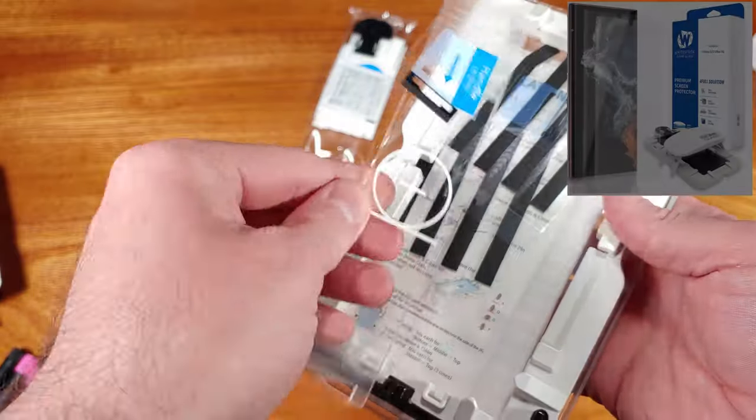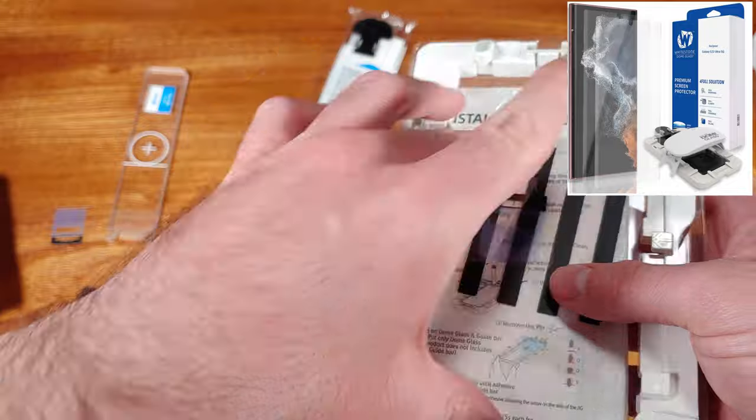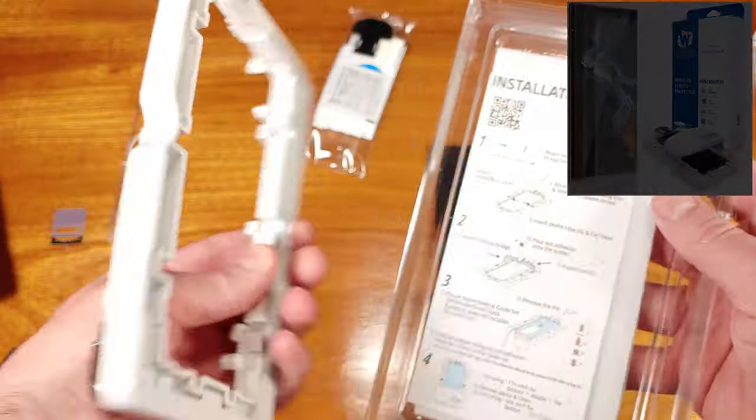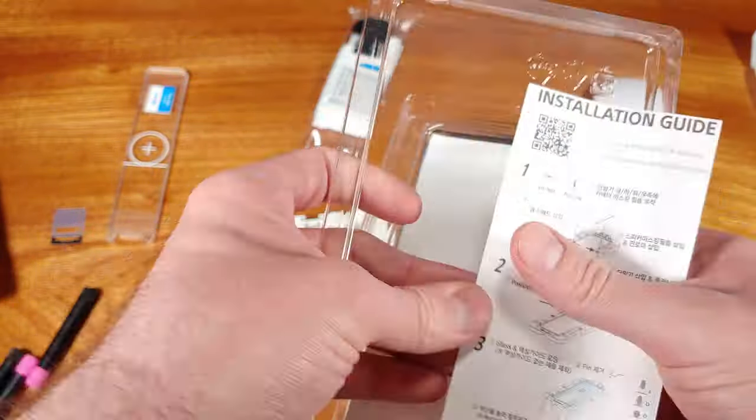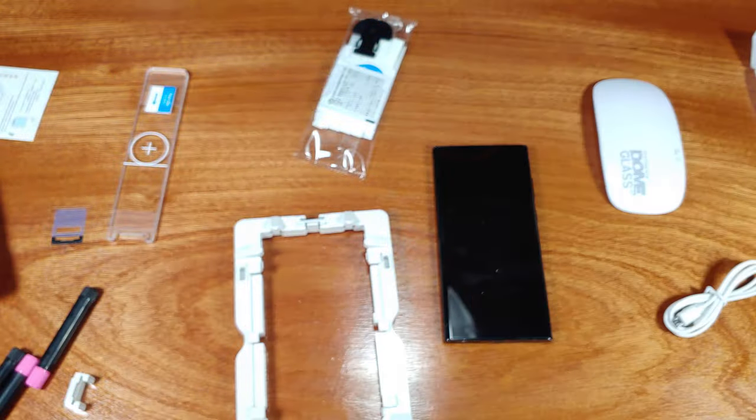The Whitestone Dome screen protector uses an adhesive-based application method. Included in the kit are two screen protectors, three vials of adhesive, one extra just in case you mess it up the first time like I did.